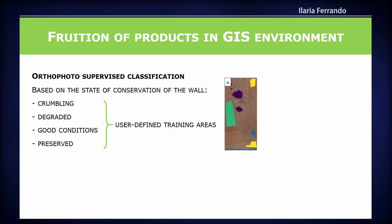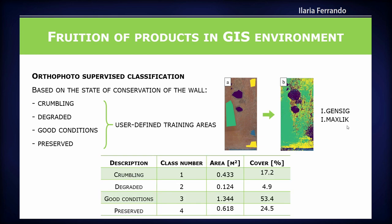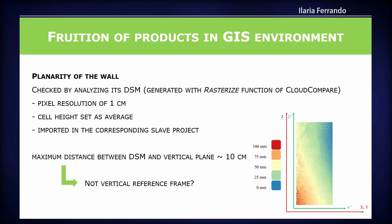We also performed supervised classification of the wall based on the state of conservation using well-known QGIS SCP and similar plugins. The table shows the area covered both in percentage and in square meters; training areas are user-defined. Finally, we verified the planarity of the wall by producing a DSM of a specific part of the wall and computing the distance between this DSM and a vertical plane, obtaining a deviation that may be related to a not-perfectly-vertical reference frame — an aspect we need to investigate further.